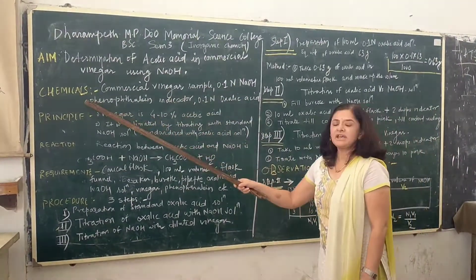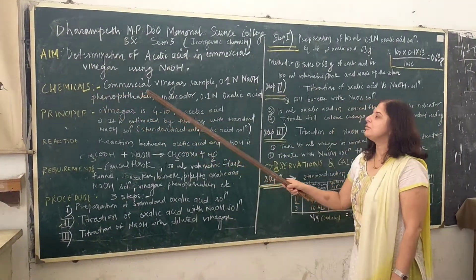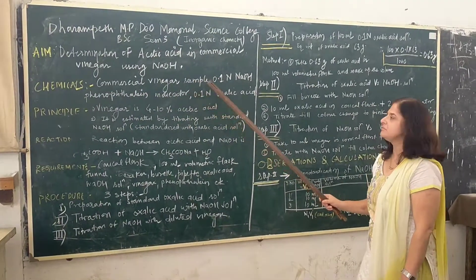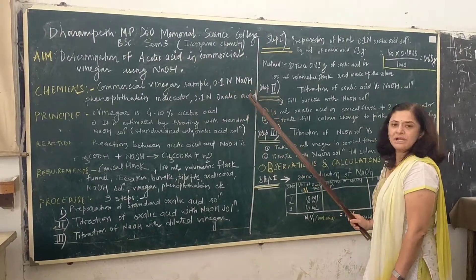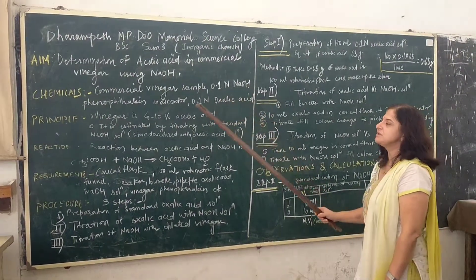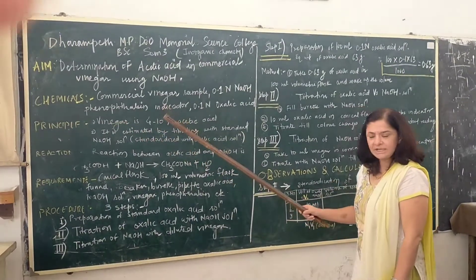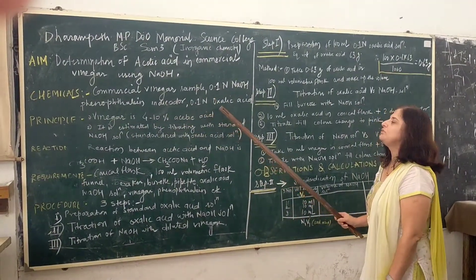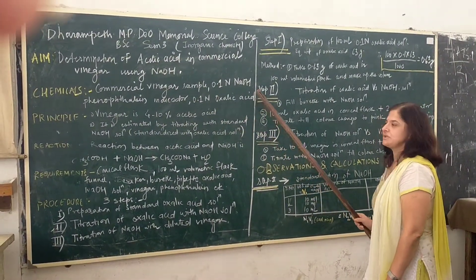The chemicals required are commercial vinegar sample solution, 0.1 normal NaOH solution, phenolphthalein indicator, and 0.1 normal oxalic acid solution.